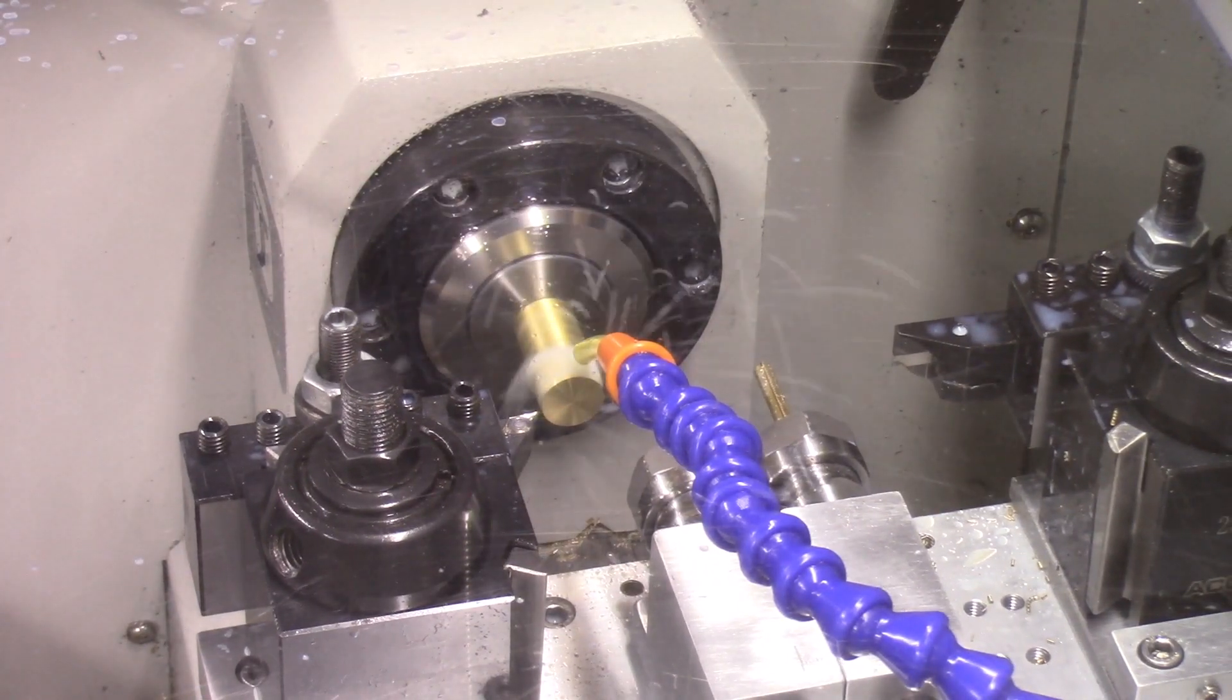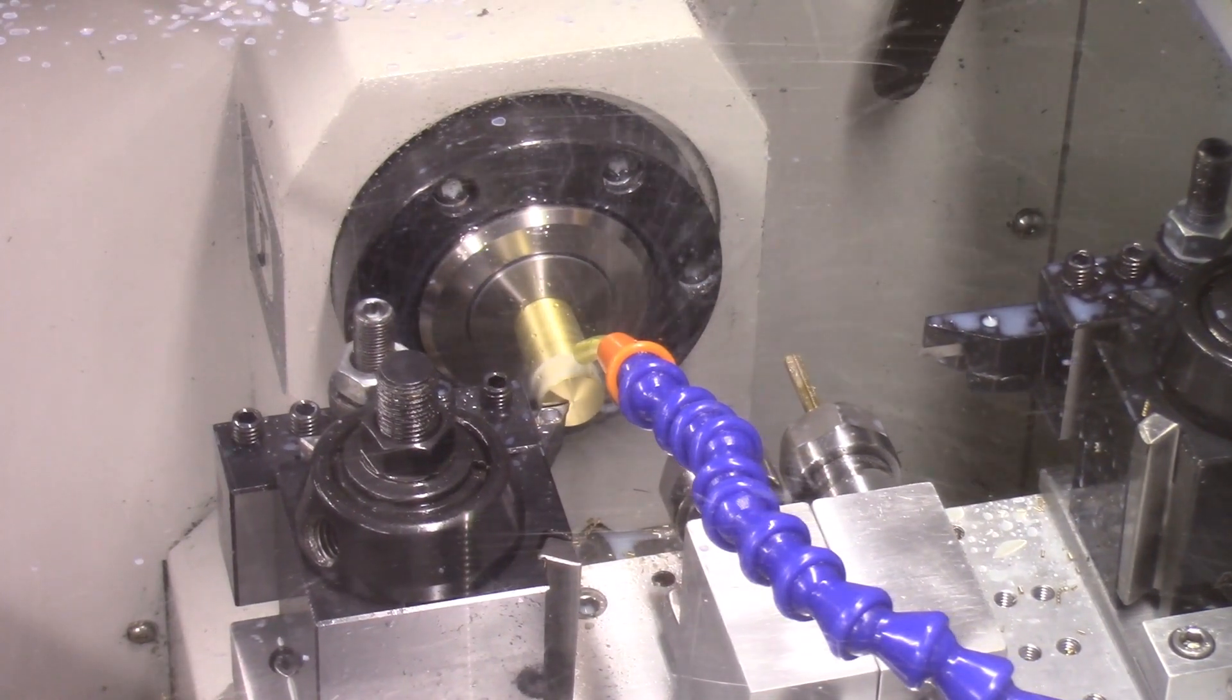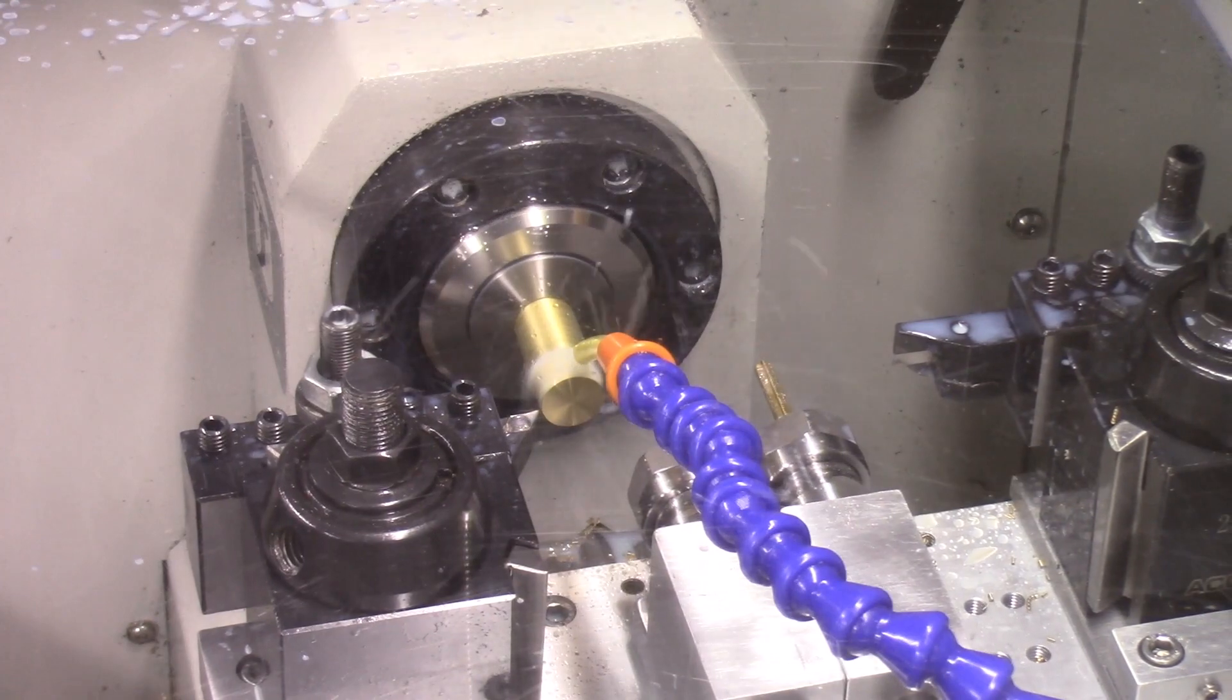Ok here we have the actual operating of the lathe. First of all using the front tool to face off the bar. I'm doing that in two separate steps.